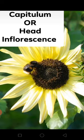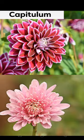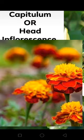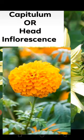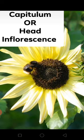Examples of Capitulum inflorescence include Surya Gandhi (sunflower), Marigold, Zinnia, Dahlia, Chamomile, and Bhindi. These are all examples of Capitulum inflorescence, belonging to the Asteraceae family. This is the first modified racimose inflorescence — the head inflorescence.